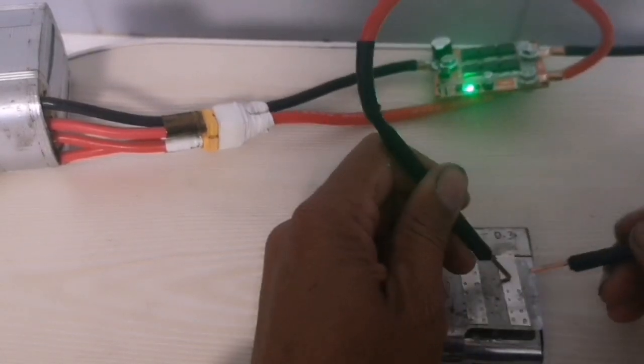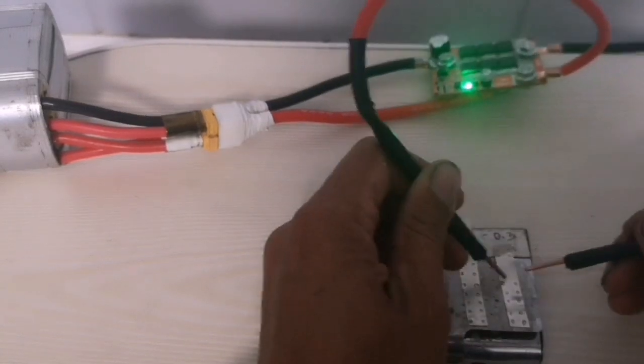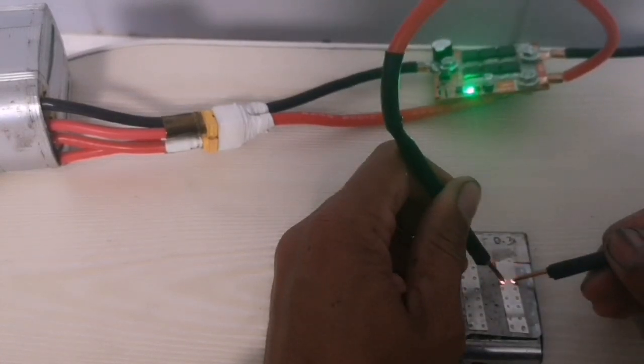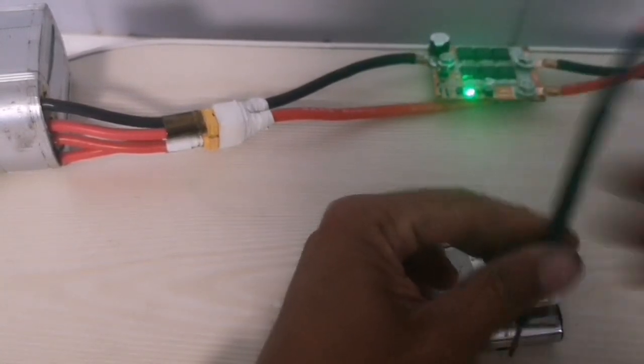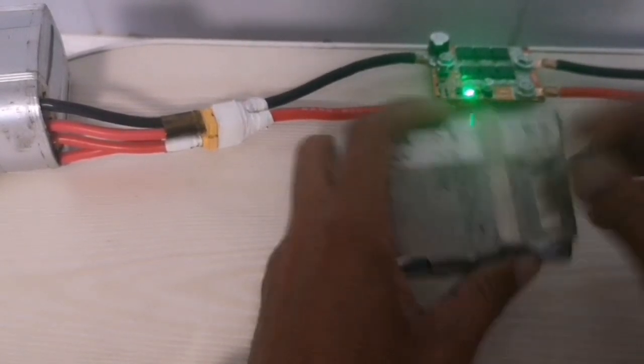You can judge if this welding spot welding works. With 0.3 nickel strip, look at that. You cannot bend it. 0.3.